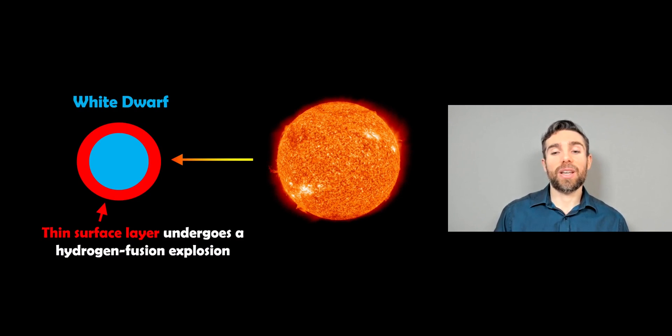Well, the difference with a nova is that as it's pulling that material off, which is likely going to be hydrogen, because the outer layers of stars are predominantly hydrogen, then that hydrogen, we have a thin layer of that on the white dwarf star, and that kind of undergoes periodic hydrogen fusion, you get a sudden flash of hydrogen fusion, which then causes the nova.